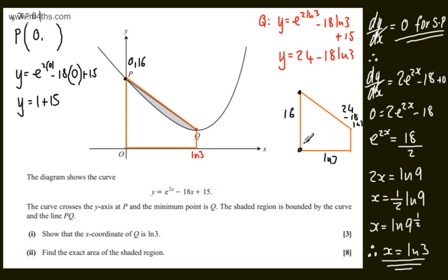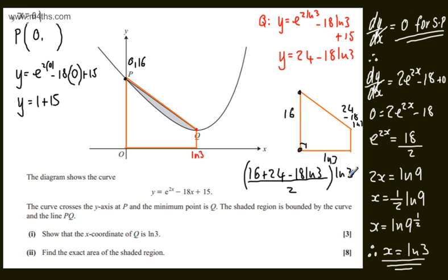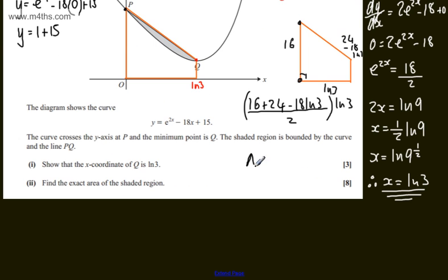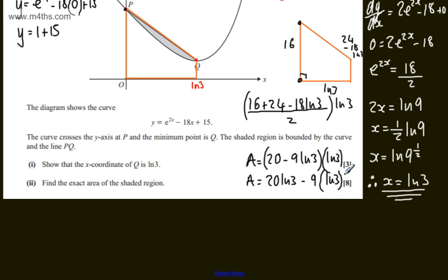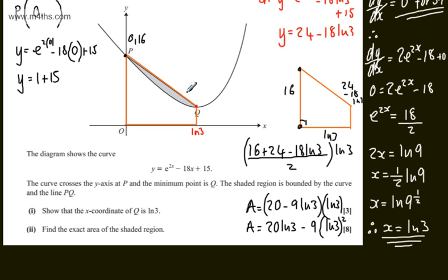Now I'll find the area of the trapezium. The area formula is: (sum of parallel sides divided by 2) times the perpendicular height. So we have (16 plus 24 minus 18 ln(3)) divided by 2, multiplied by ln(3). Tidying this up: (40 over 2) minus (18 over 2) gives 20 minus 9 ln(3), multiplied by ln(3). This gives the area as 20 ln(3) minus 9 times ln(3) squared.